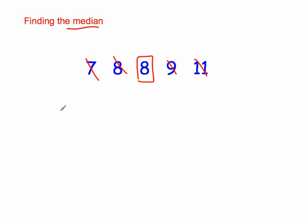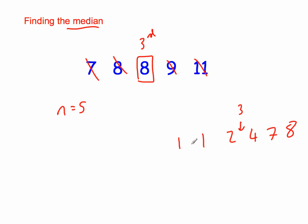Here we've got five numbers, so n is equal to 5, and the median is the third term. Now if I had 1, 1, 2, 4, 7, and 8 — here we've got six numbers. The median would be in between the values, so it's going to be equal to 3. With six numbers, n is equal to 6, and the median is in between the third and fourth terms — that's the 3.5th value.